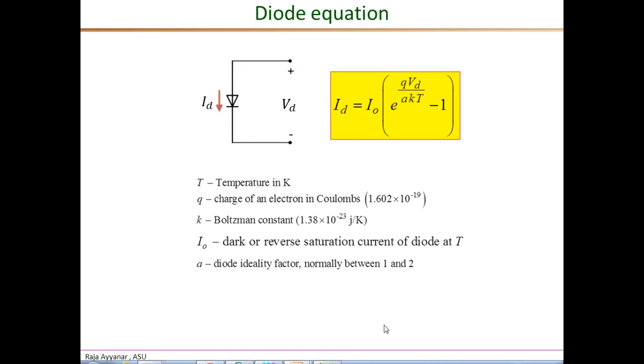You can refer to a standard semiconductor physics book for the diode equation or the Shockley equation, which gives the diode current as a function of voltage. So ID, the diode current, is given as IO, the dark or reverse saturation current at a given temperature, times exponential of q times VD, the diode voltage, divided by a KT minus 1.